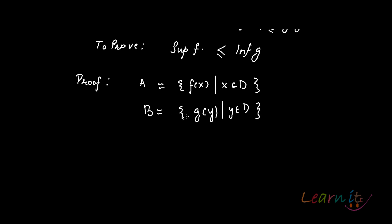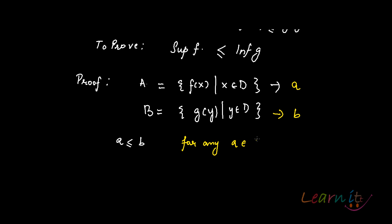Now, what do we know from what is given to us? We know that a is always less than or equal to b. All the elements here will be a, all the elements there will be b. We know that a ≤ b for any a belonging to set A and b belonging to set B.